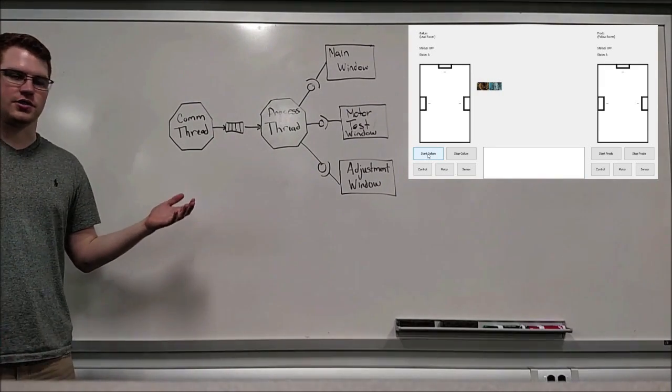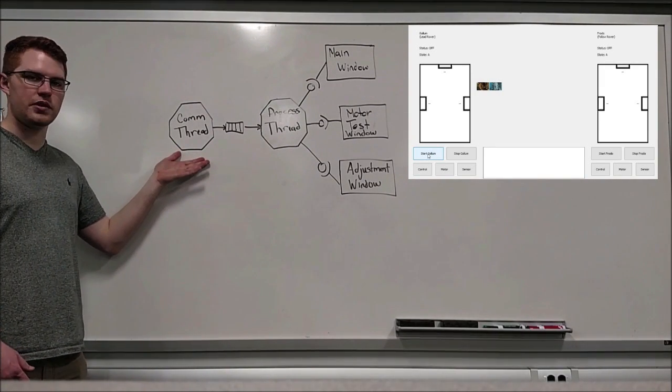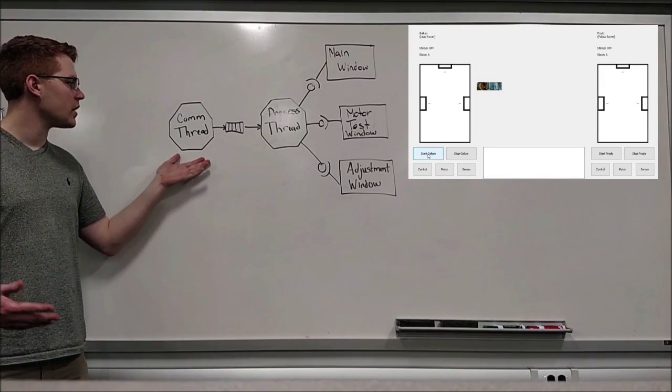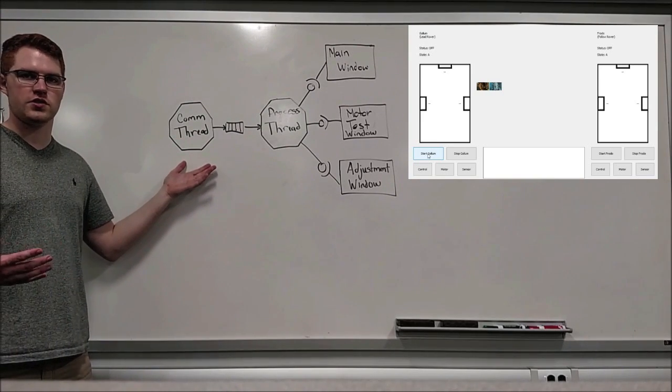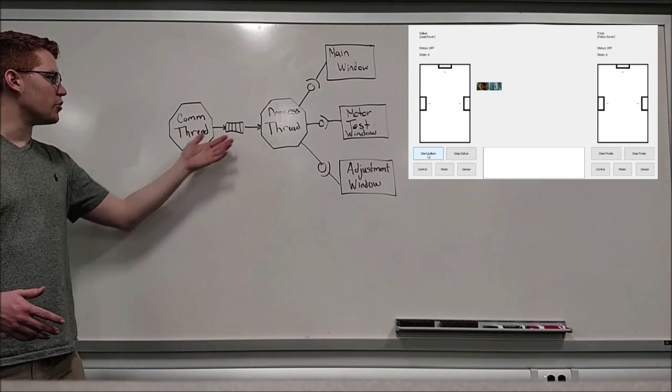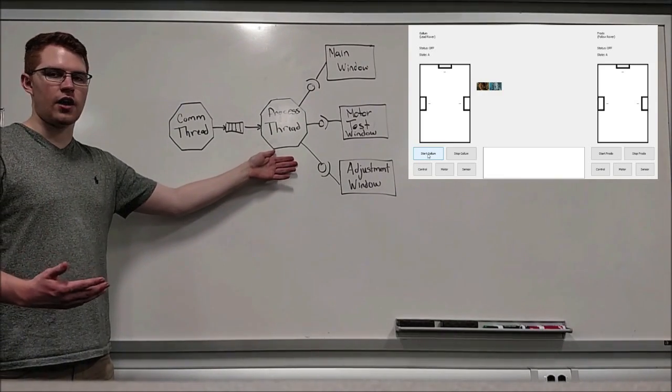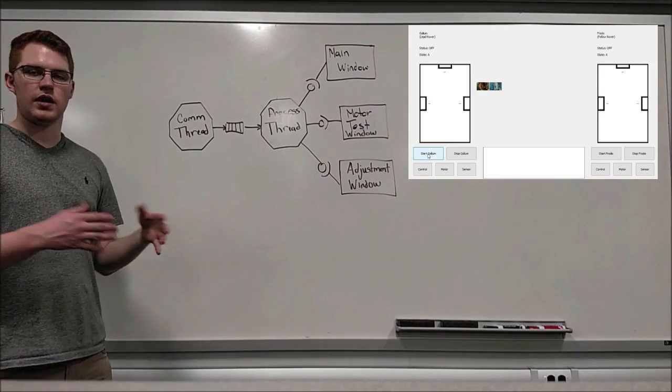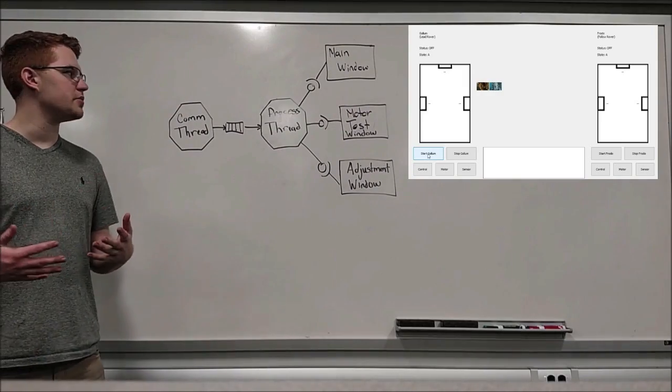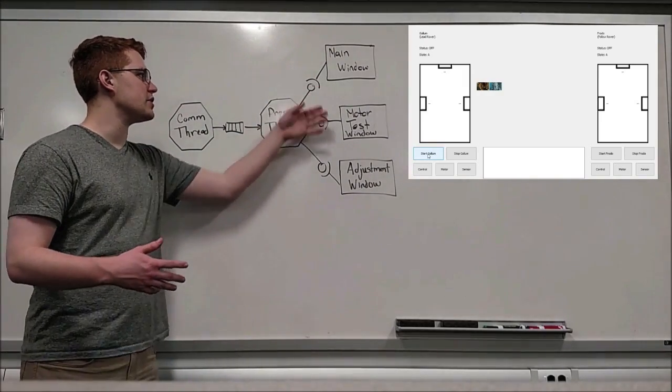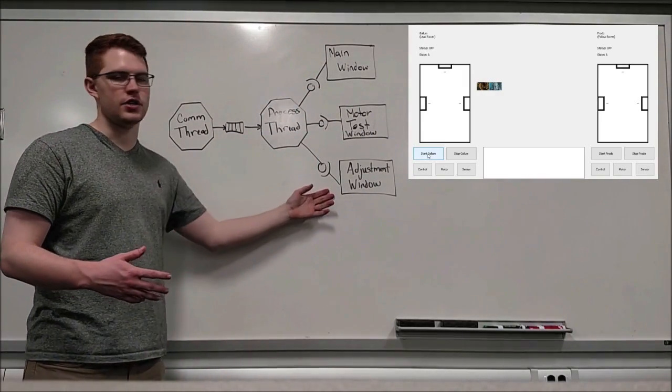So, the flow of information goes: a message will come in through the communication thread from a rover. The communication thread will figure out which rover sent it and what the information says. It will put it in the queue, and then the process thread will look for that information in the queue, get it out, process it, and then, depending on what the information is and what needs to be changed, it will send out information to the main window, the motor test window, or the adjustment window.